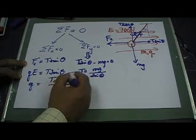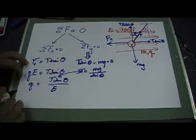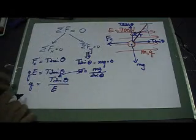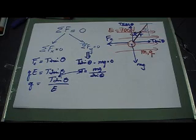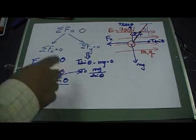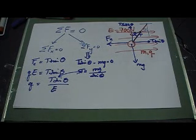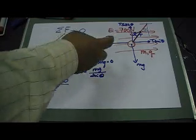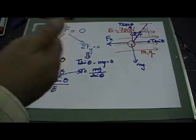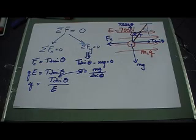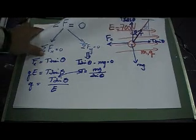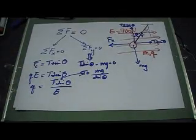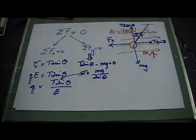T comes from the earlier equation, and sine theta and E are given — E equals 700 newtons per coulomb, and Q is the magnitude of the charge. Now for the sign of the charge: the sign is determined from the direction of the force. Since the direction of the force is opposite to the direction of the field, as we discussed in class, the charge must be negative. That's the solution to problem number one.